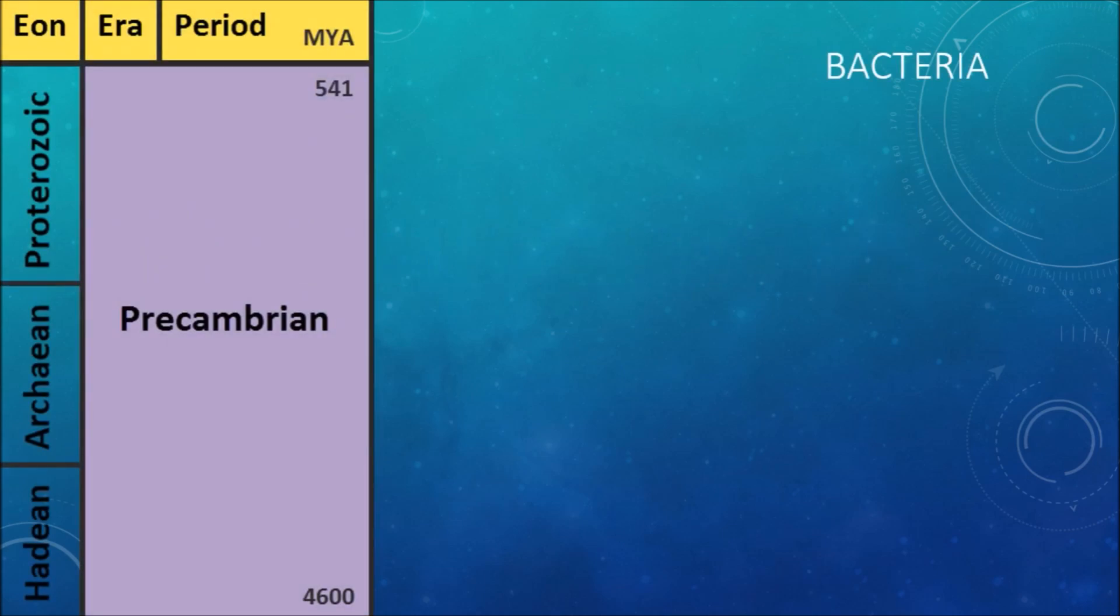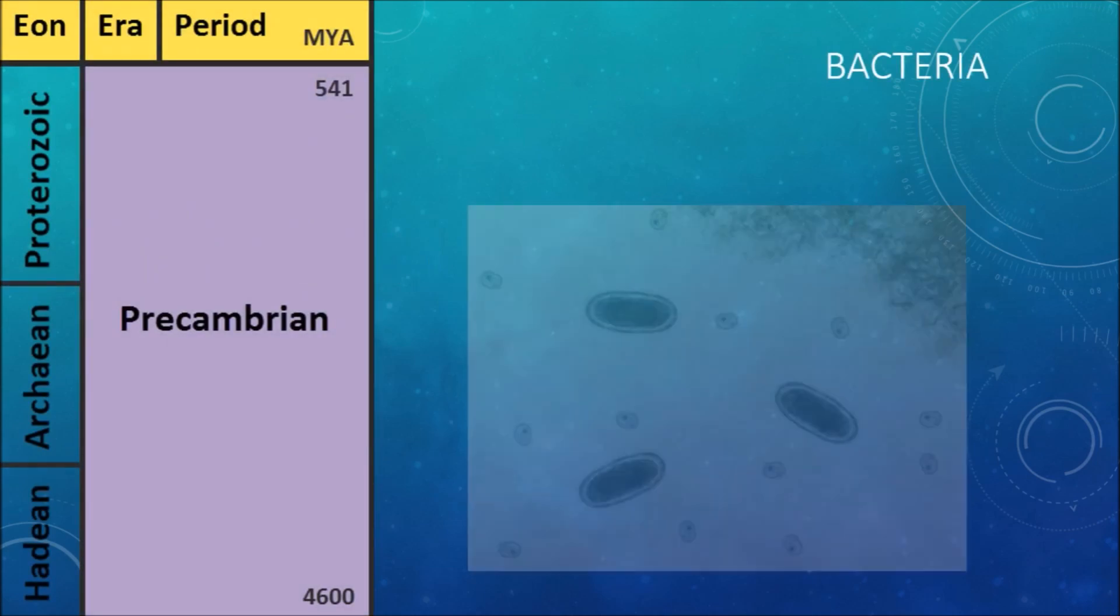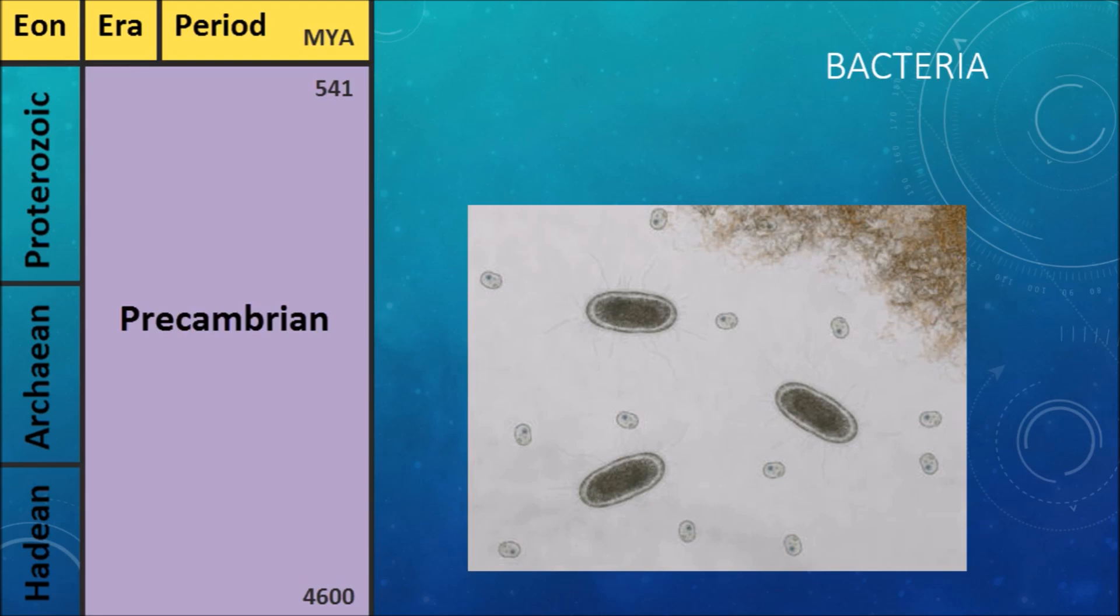When life first appeared, it was in a very simple form called bacteria. Bacteria are still with us, but you can't see them without a microscope. For most of the time known as the Precambrian period, bacteria and other single-celled critters were the only life on earth.